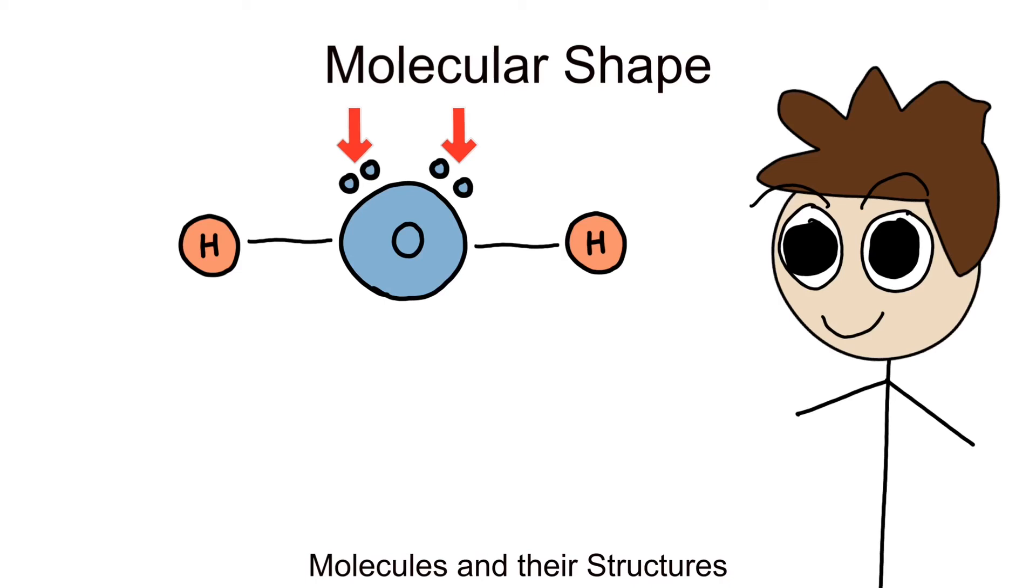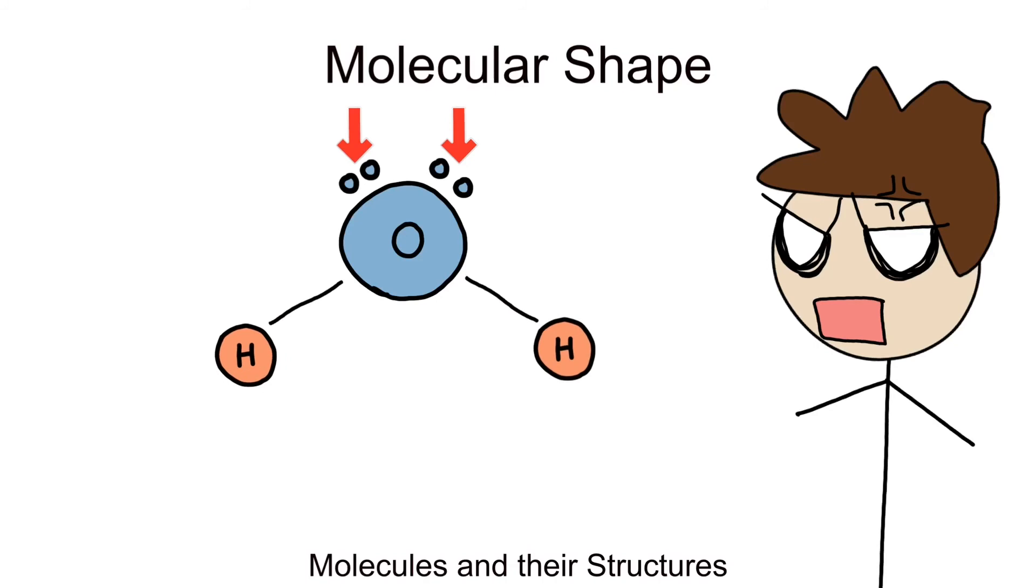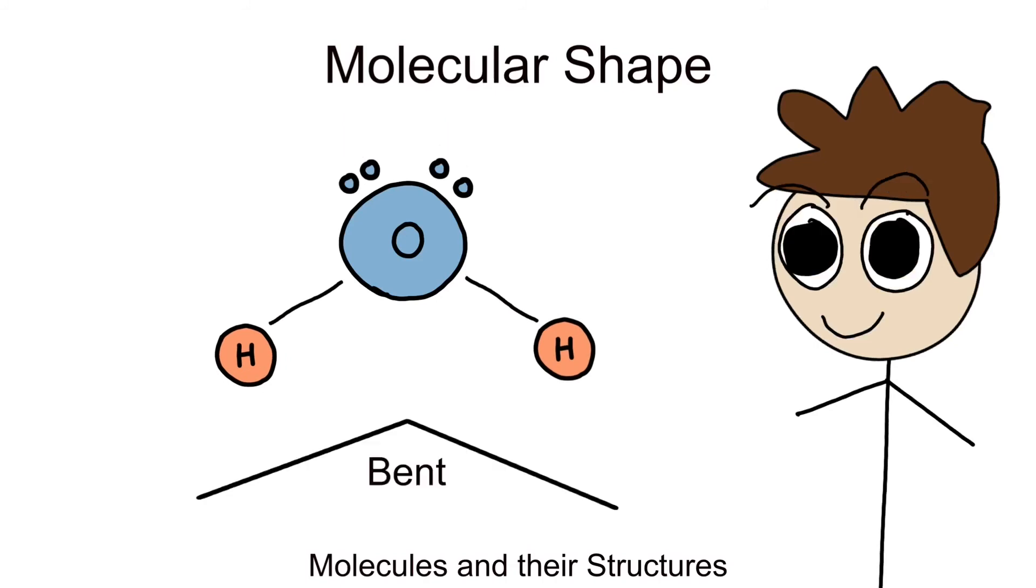These electrons cause some serious repelling forces against the two hydrogen bonds. And instead of allowing hydrogen to comfortably spread out on each end of the oxygen, the spare electrons cause tension, slightly pushing the hydrogens down at an angle forming this bent shape.